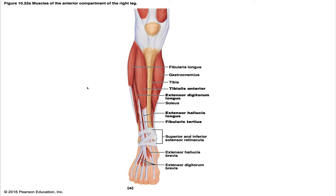The tibialis anterior is a superficial muscle on the lateral aspect of the tibia. Its origin is the lateral condyle and upper two-thirds of the tibial shaft and the interosseous membrane; its insertion is by a tendon into the inferior surface of the medial cuneiform and the first metatarsal bone. It's the prime mover of dorsiflexion, inverts the foot, and assists in supporting the medial longitudinal arch; innervated by the deep fibular nerve. The extensor digitorum longus is a bipennate muscle on the anterolateral surface of the leg, running lateral to the tibialis anterior. Its origins are the lateral condyle of the tibia, the proximal three-fourths of the fibula, and the interosseous membrane. Its insertion is the middle and distal phalanges of toes 2, 3, 4, and 5 via the extensor expansion. It's the prime mover of toe extension, acts mainly at the metatarsophalangeal joint, also dorsiflexes the foot, and is innervated by the deep fibular nerve.